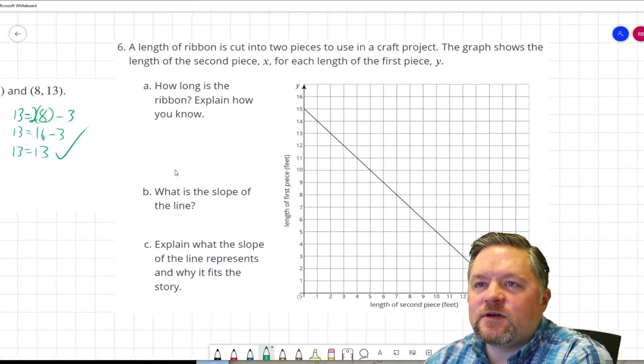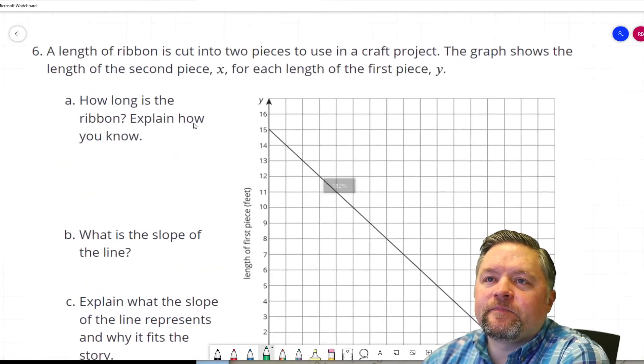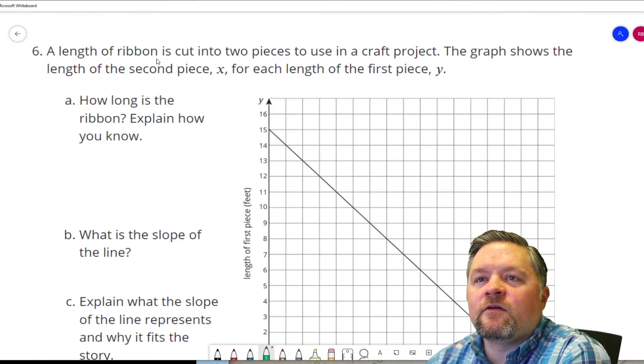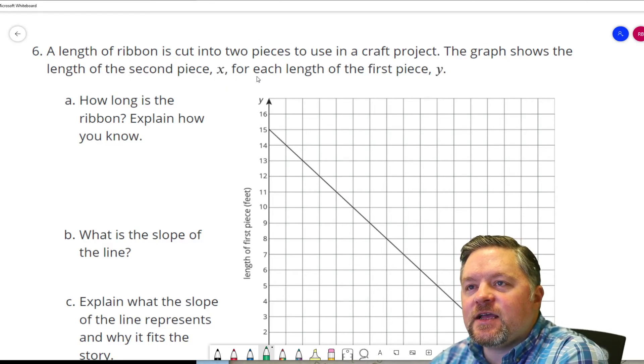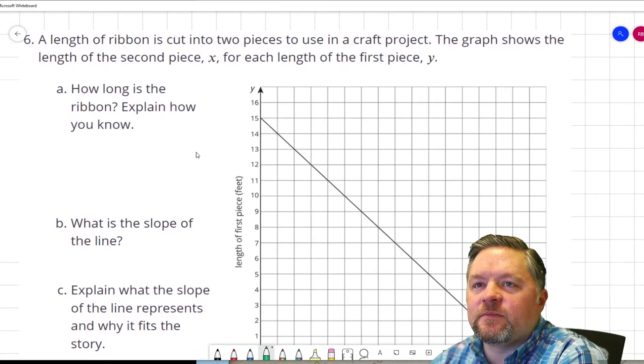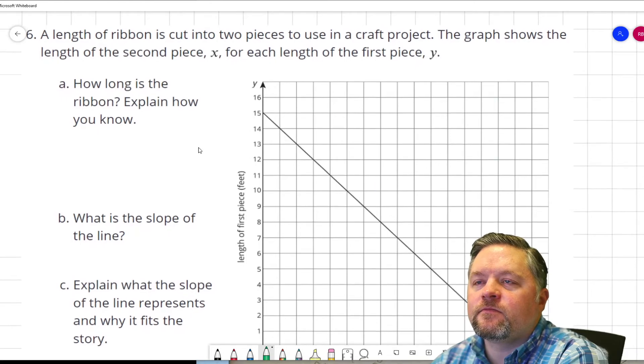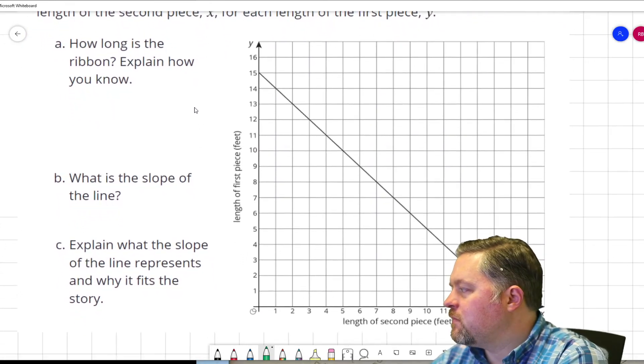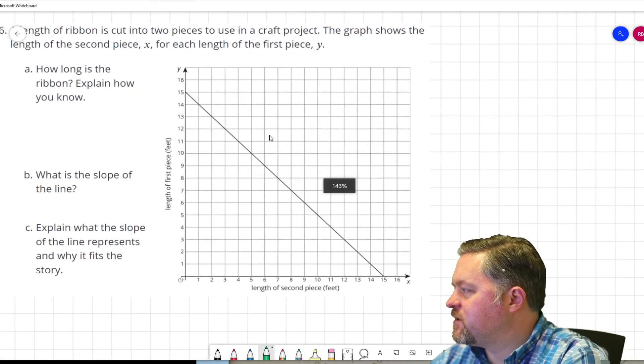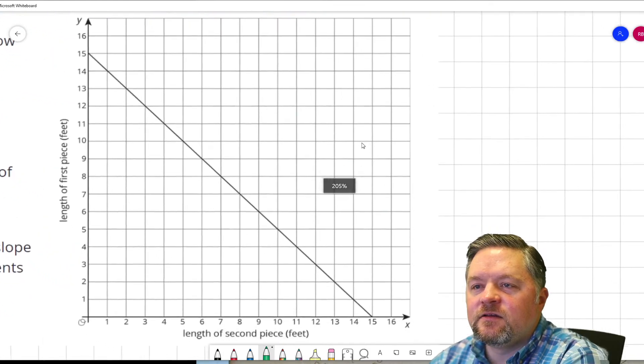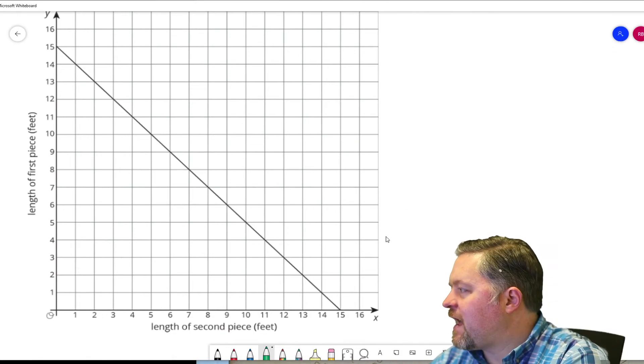Lots of questions today, it seems like. The length of ribbon is cut into two pieces to use in a craft project. The graph shows the length of the second piece, X, for each length of the first piece, Y. How long is the ribbon? Let me zoom out a little bit so we can see all of this. Let me just show you the graph here.